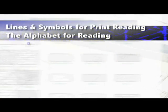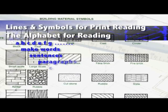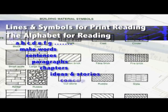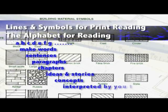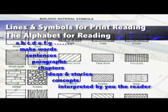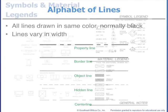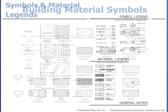We are all used to reading books, which use the 26 letters of the alphabet organized to make words and sentences, paragraphs, chapters, ideas, stories, and concepts — all read and interpreted by us, the readers. Reading drawings is much the same way, except we use more than words. We use lines, symbols, and graphics called pocheing to relate that information.